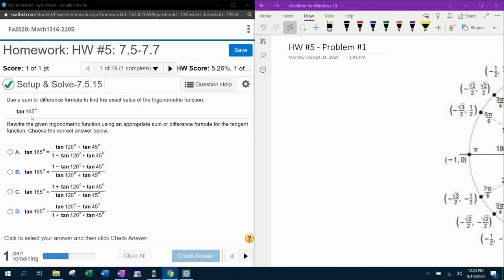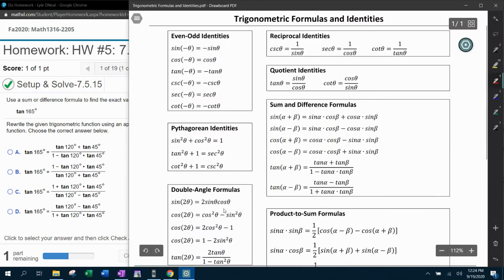So our function is tangent. What we want to do is bring up our formula chart and notice that we do have two formulas for tangent in the sum or difference category here. Sum or difference formulas, we've got tangent of alpha plus beta, tangent of alpha minus beta.